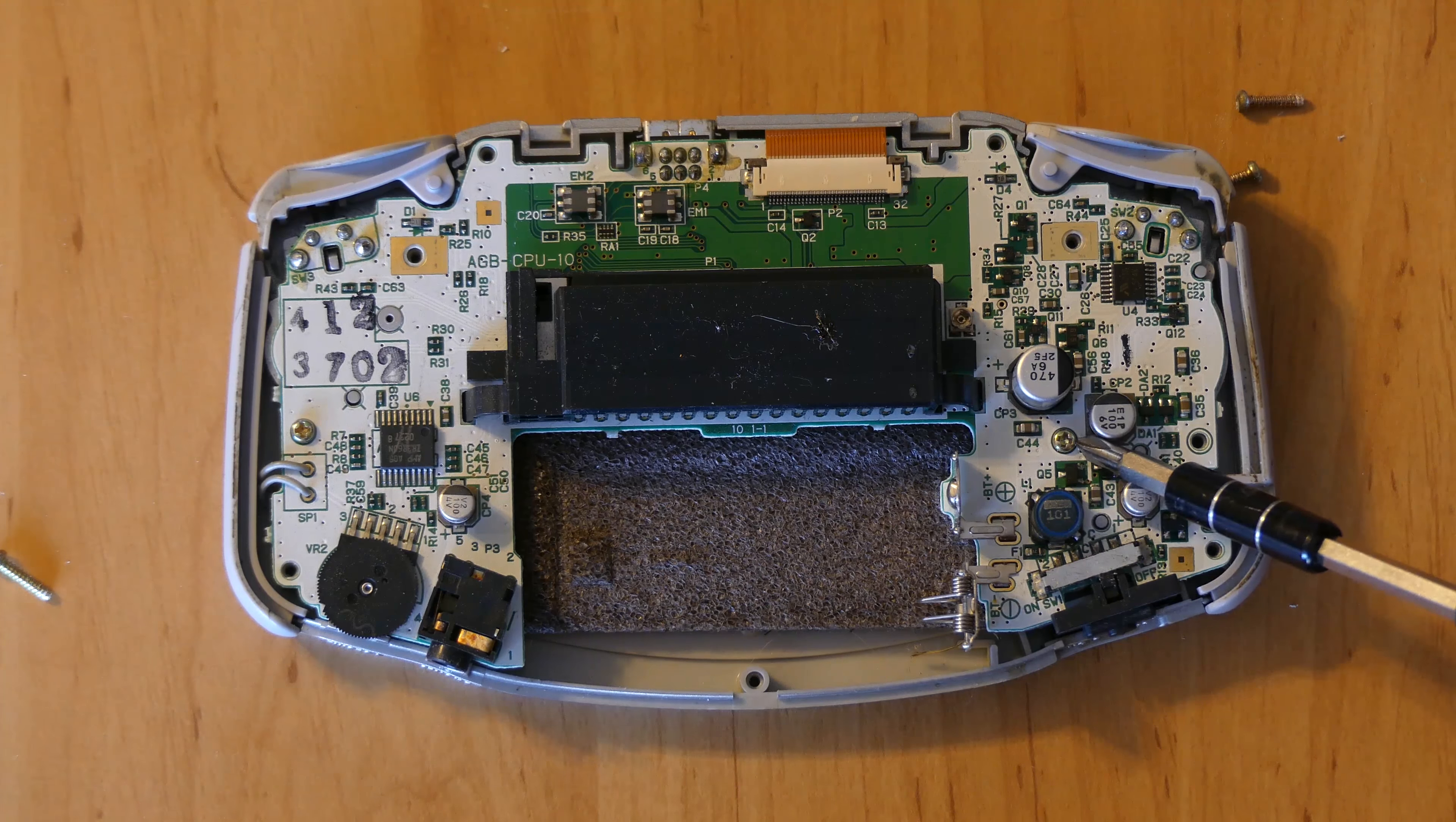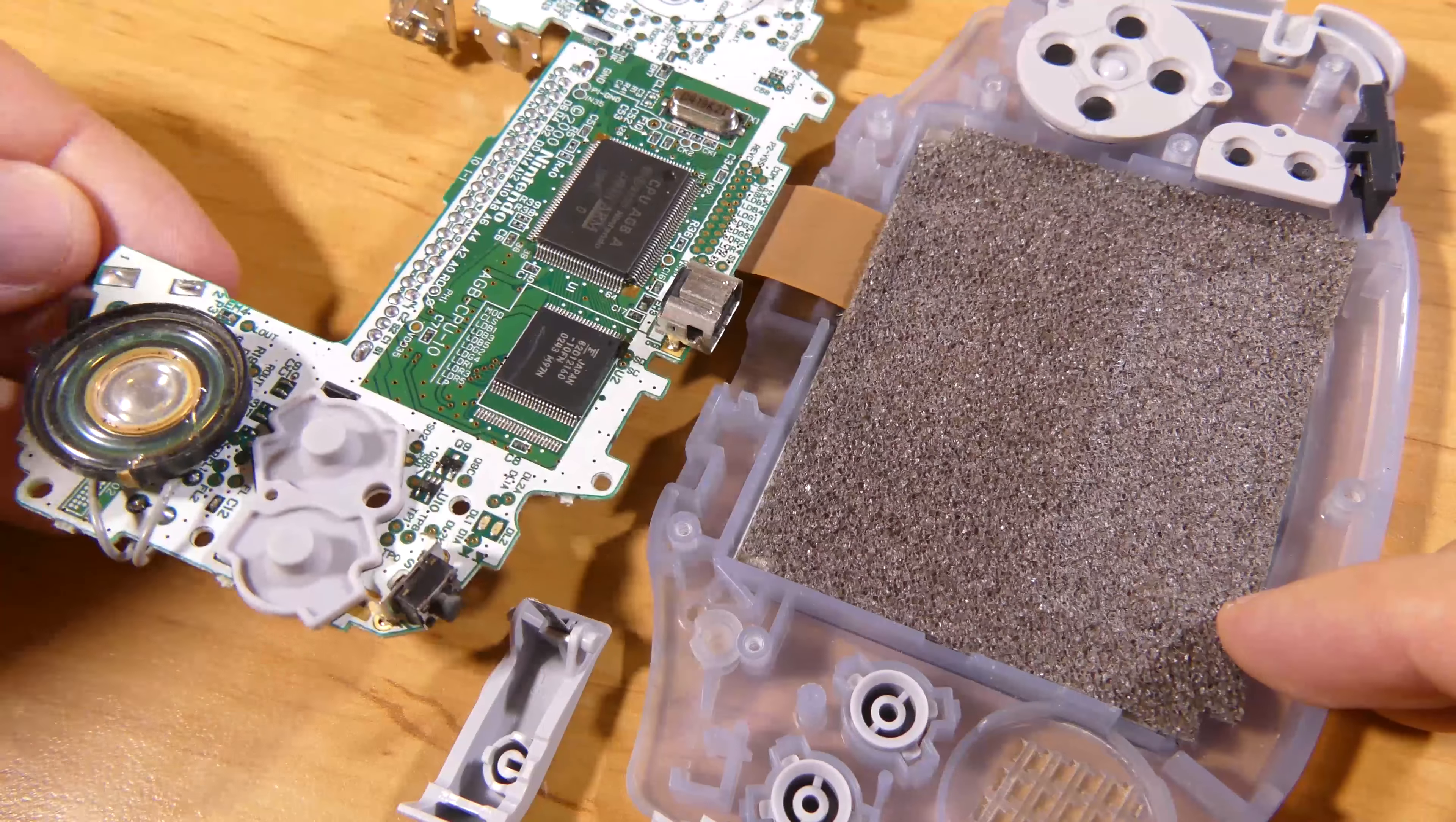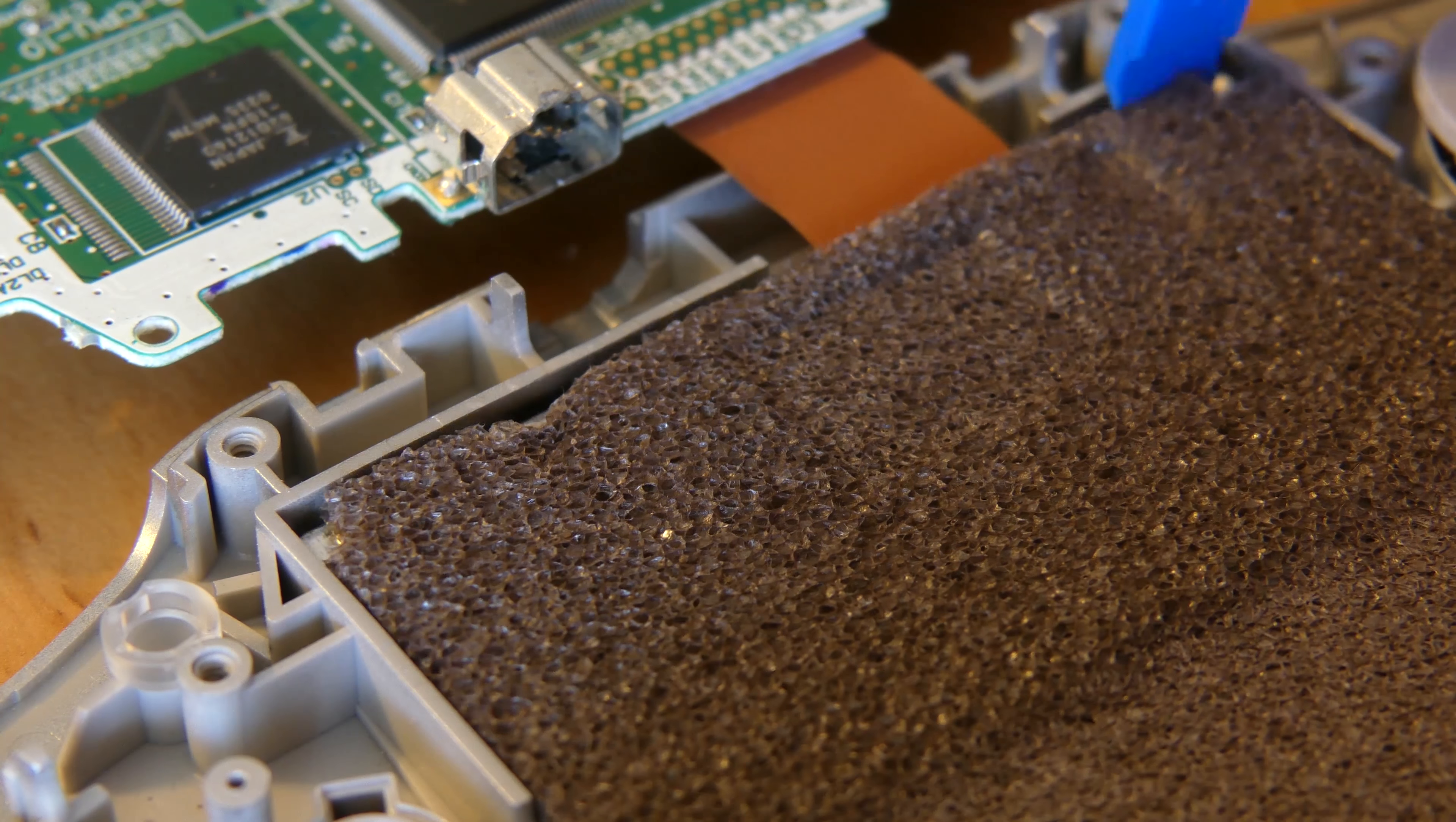Next, remove the two Phillips screws in the back of the motherboard. Remove the motherboard. Pop out the tabs on the side of the ribbon cable for the screen and pull it out. Next you'll need to pry out the old screen. It has some adhesive holding it in place, so be careful not to damage it.